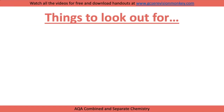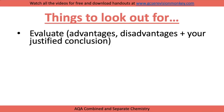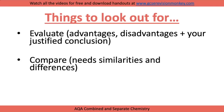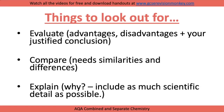Some things to look out for in chemistry paper 1. Evaluate questions require advantages, disadvantages, and your own justified conclusion. Compare questions need similarities and differences in your answer. Explain questions mean why, so include as much scientific detail as possible. The questions won't remind you to include these things, so these are things you need to remember to help structure your answers.